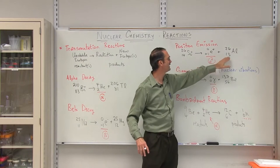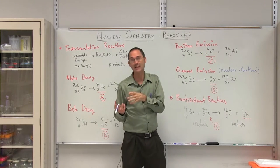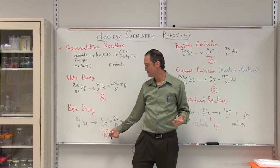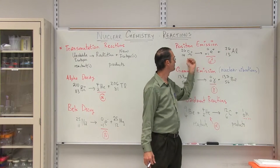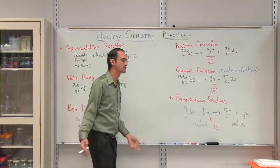14 minus 1 leaves us with 13. 26 minus 0, because again, if the positron is the antiparticle of the electron, it has no mass in the same way that the beta particle has no mass. 26 minus 0 leaves us with 26. So we go from silicon back to aluminum and we have these positrons that are zooming out.